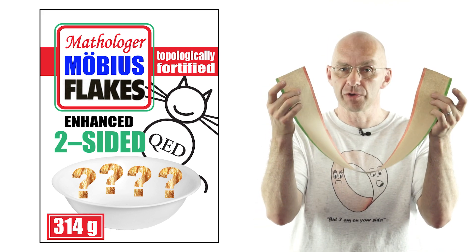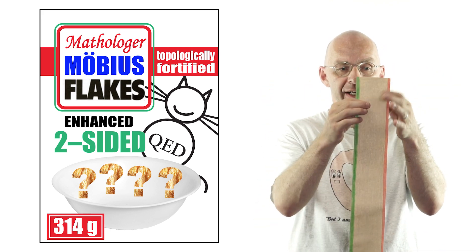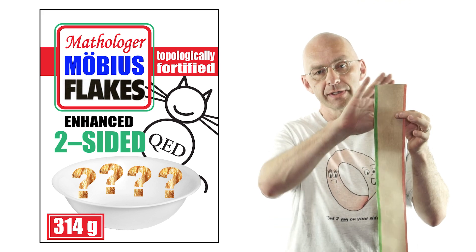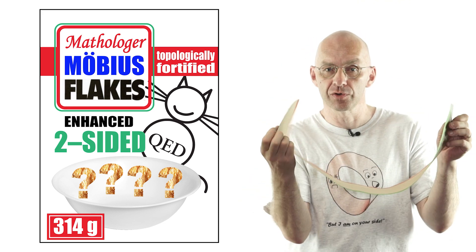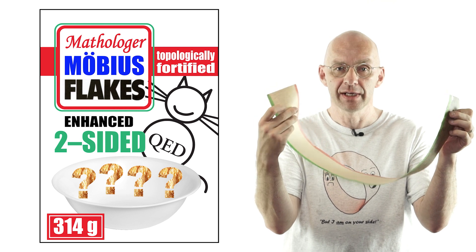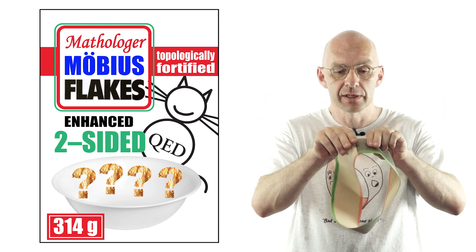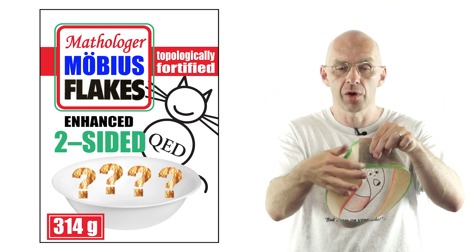Quick revision. This strip of paper has two edges and two sides. To make it into a Möbius strip what I have to do is to bring the ends together such that the edges combine into one long edge.